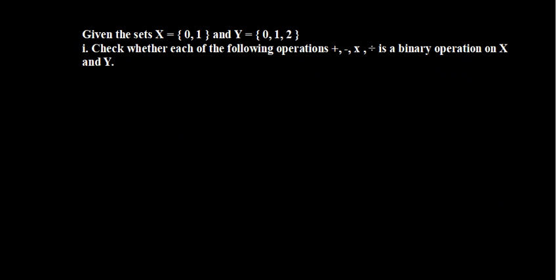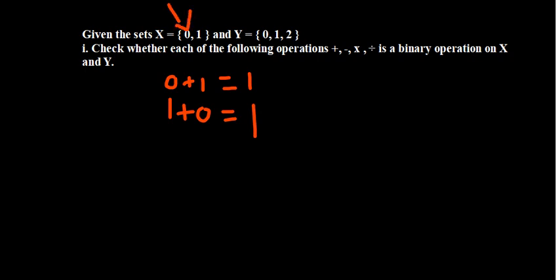Given set X equal to {0, 1} and set Y, check whether each of the following operations is a binary operation on those sets. Starting with X: is addition a binary operation on set X? Try it out — zero plus one is one, and one plus zero is one. All results are still part of the set, so we can say addition is a binary operation on X.